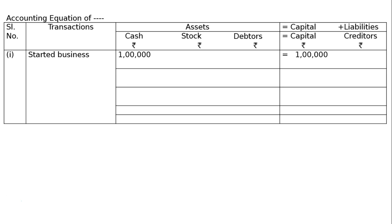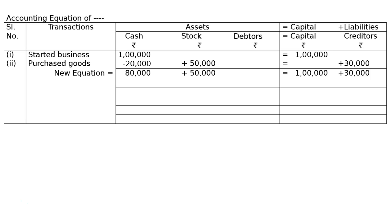The second transaction: purchased goods for cash ₹20,000 and on credit ₹30,000, so total purchases are ₹50,000. Cash will be reduced by ₹20,000, total stock will be increased by ₹50,000, and creditors will be increased by ₹30,000. The new equation becomes: cash ₹80,000, stock ₹50,000, capital ₹1 lakh, creditors ₹30,000.